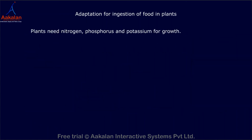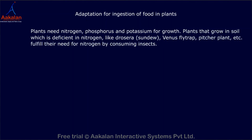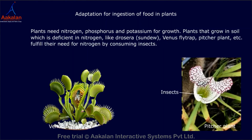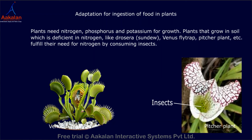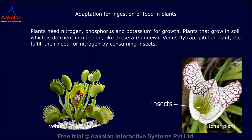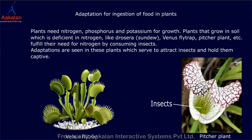Plants need nitrogen, phosphorus, and potassium for growth. Plants that grow in soil deficient in nitrogen — like Drosera (sundew), Venus flytrap, and pitcher plant — fulfill their need for nitrogen by consuming insects. Adaptations are seen in these plants which serve to attract insects and hold them captive.